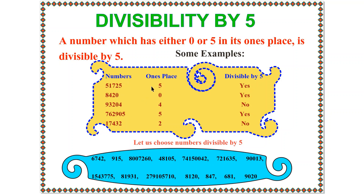Let us do some examples. The first number is 51725. Its 1s place is 5. According to the rule, a number with 0 or 5 in its 1s place is divisible by 5, so 51725 is divisible by 5. The next number is 8420. Its 1s place is 0, so it is also divisible by 5.